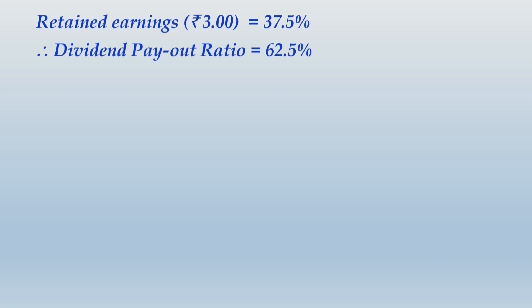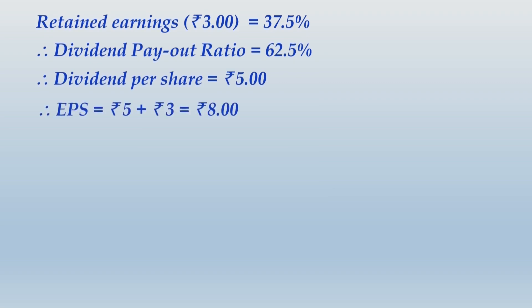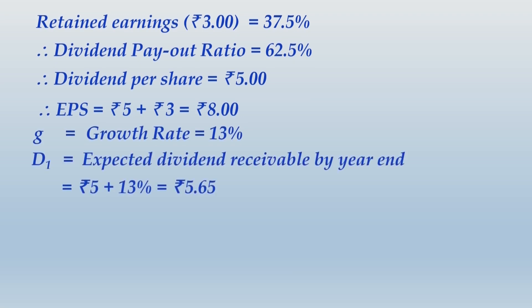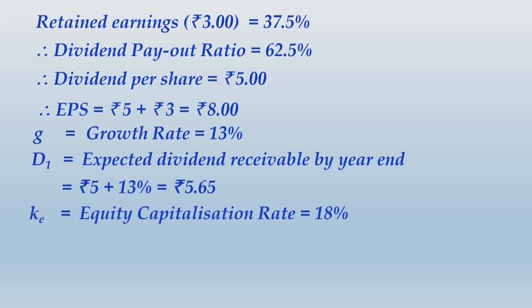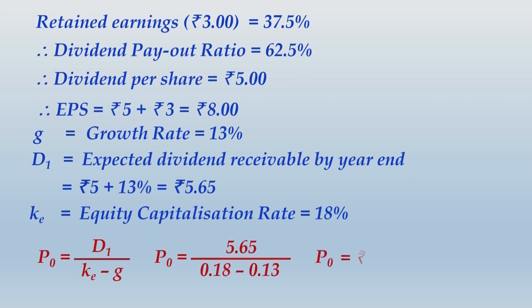Growth rate is already given as 13%. The dividend computed is D0 (year just ended), so D1 = D0 × (1 + G) = 5 × 1.13 = rupees 5.65. Ke is 18%. Applying Gordon's model: P0 = 5.65 ÷ (18% − 13%) = 5.65 ÷ 5% = rupees 113. Please write up this entire calculation — that is the end of the solution.